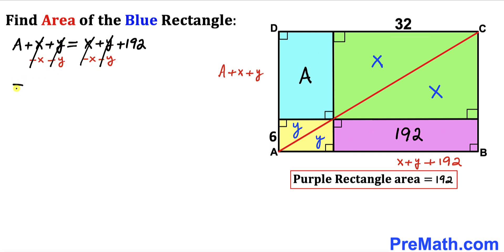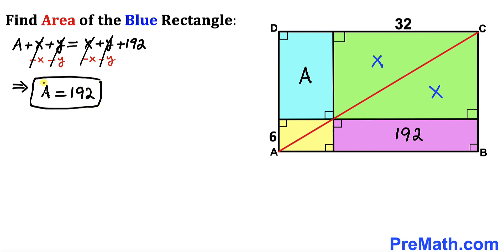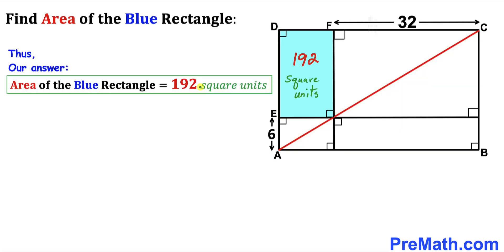Therefore, area A turns out to be 192 square units. Since A is the area of the blue rectangle, the area of the blue shaded rectangle is 192 square units. That's our final answer. Thanks for watching and please don't forget to subscribe to my channel for more exciting videos.